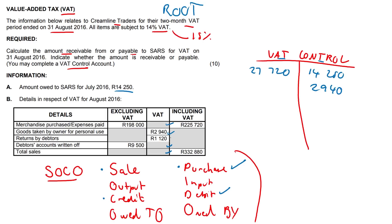Next, returns by debtors. A return by a debtor means the root transaction was initially a sale, and this is a reversal of that sale. So 1,120 moves from the credit side to the debit side: 1,120. Next, debtors accounts written off. Initially we made a sale, so now we need to write off the account on the debit side. The VAT amount is 9,500 times 14%, giving us 1,330.